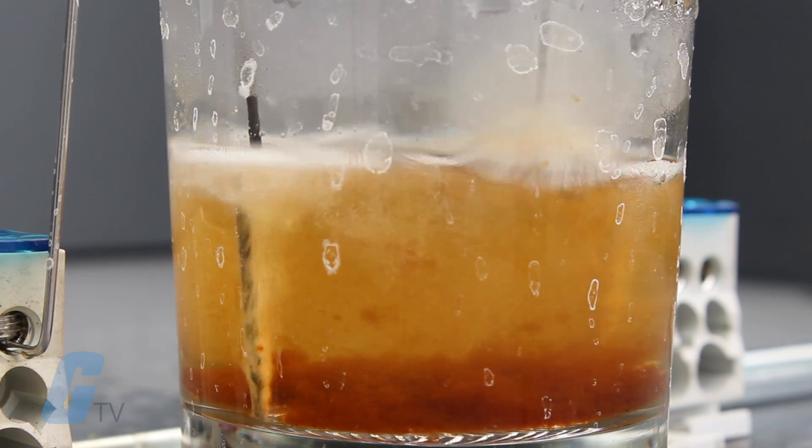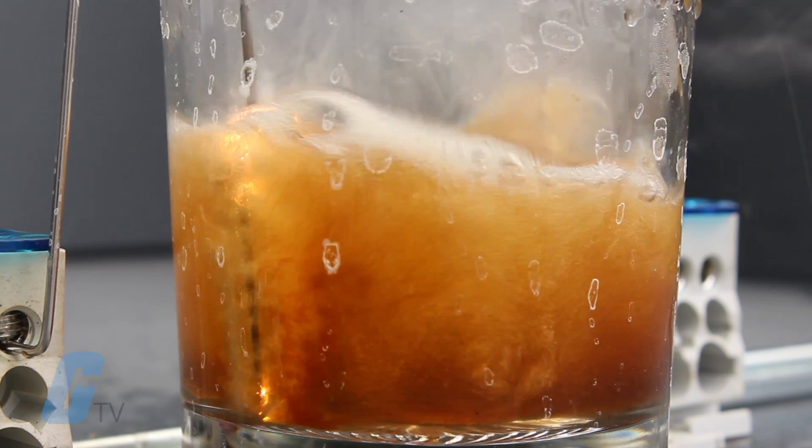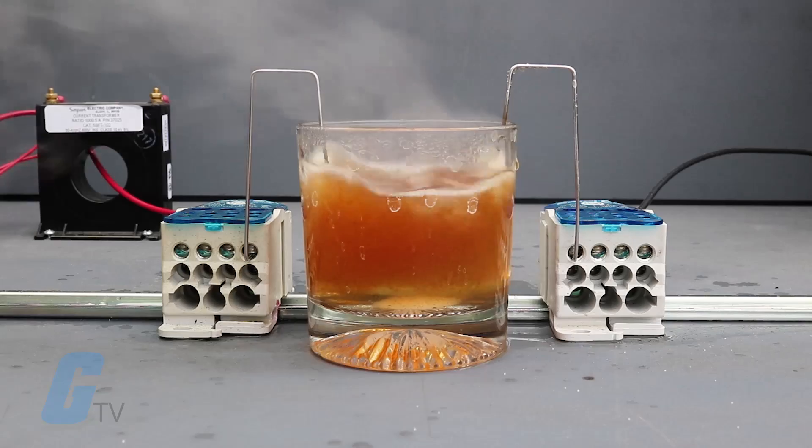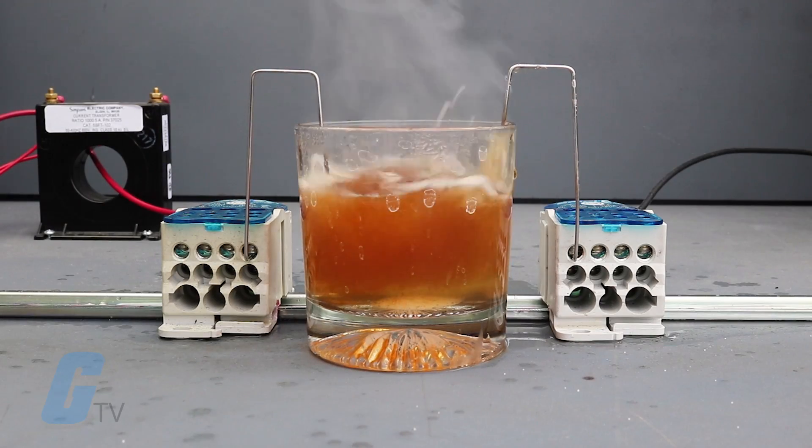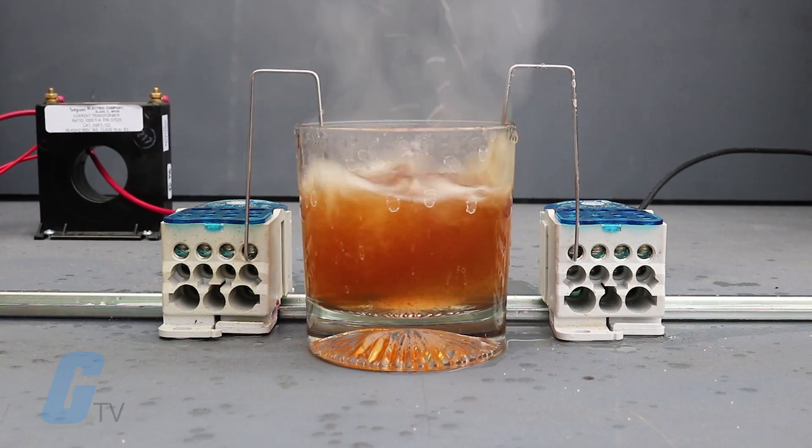Intentionally added chemicals in table salt, such as sodium ferrocyanide and potassium iodide, caused the color of the water to change once the voltage was applied. If we had used pure sodium chloride instead, that color change effect would not have occurred.